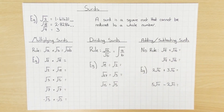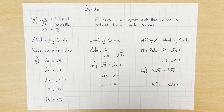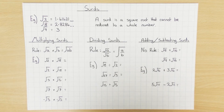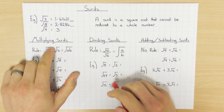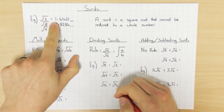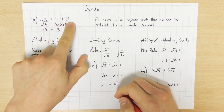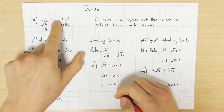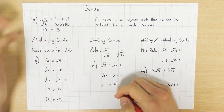Hi guys, in this video we're going to have a look at surds. I've slightly edited this video from my original just to include a few more examples to hopefully clear up a few issues that some students have had. So first of all, what is a surd? Well, a surd is a square root that cannot be reduced to a whole number. If I was to do the square root of 2 on a calculator and press equals I would have 1.41421 and it would keep going. So obviously that's not a whole number, so the square root of 2 is a surd.